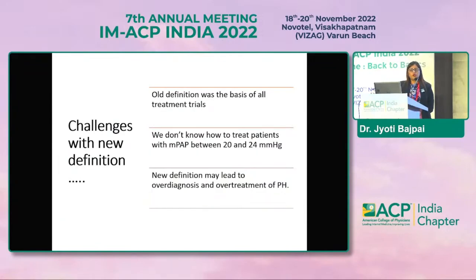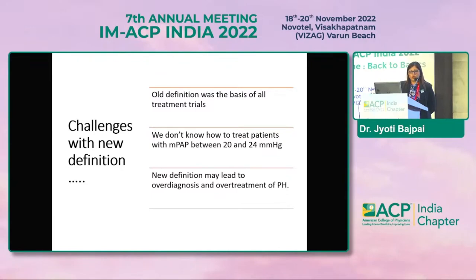What are the challenges with this new definition? The old definition was the basis of all treatment trials — all trials enrolled patients using the old definition. Now the criteria have changed but we still have the same drugs and same trial data. We don't know how to treat patients with mean PAP between 20 and 24 mmHg. The new definition may also lead to over-diagnosis and over-treatment for pulmonary hypertension.